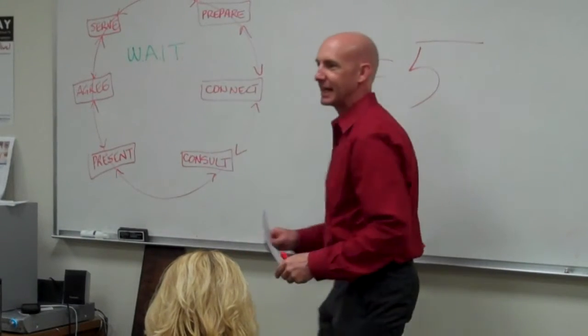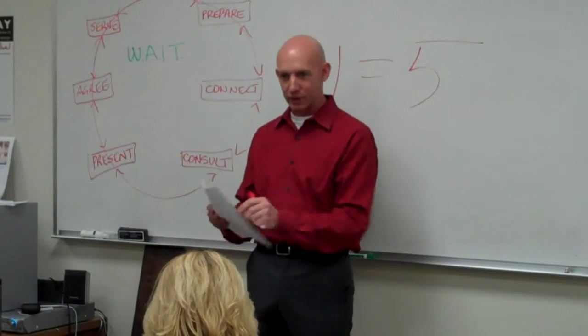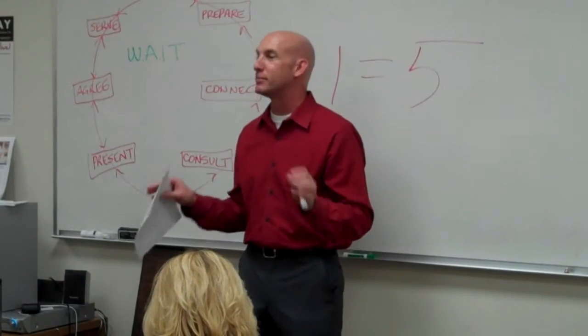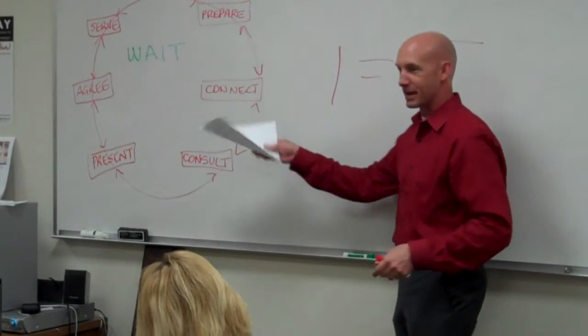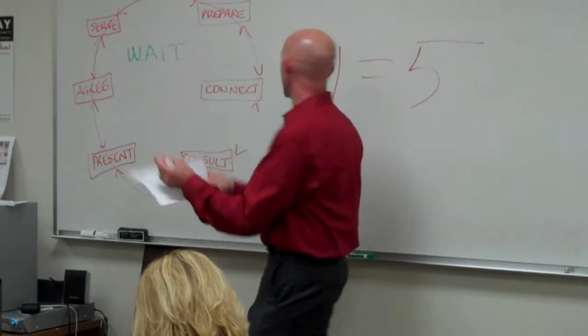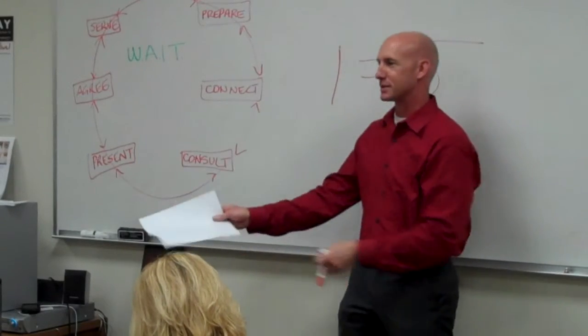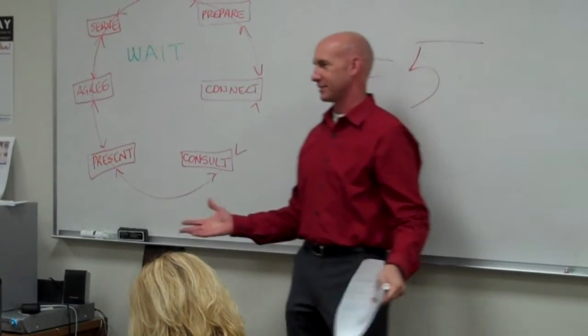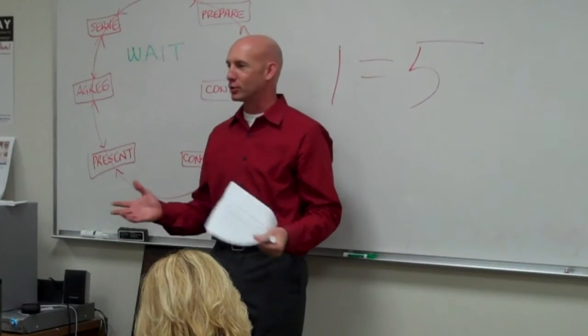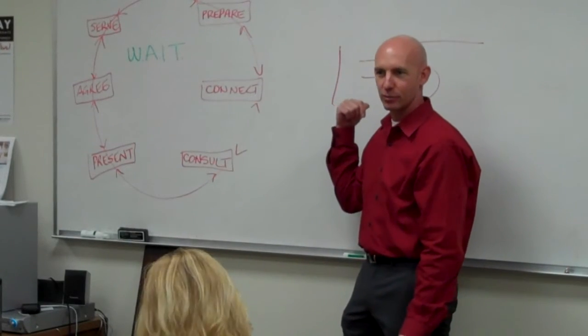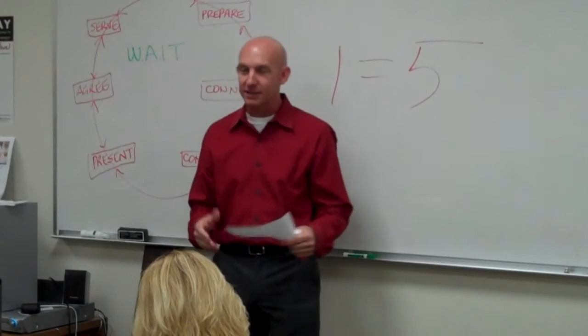So here's basically what you do. You're at the end of the listing presentation, you're signing the listing paperwork and you say, guys, before I go, there's one more thing I need to ask you to help me with. And then you take out a blank piece of paper, and real big on it you just write one equals five. And just write it on a piece of paper there in front of them and let them look at it. What are you thinking? What does that mean? How does one equals five?